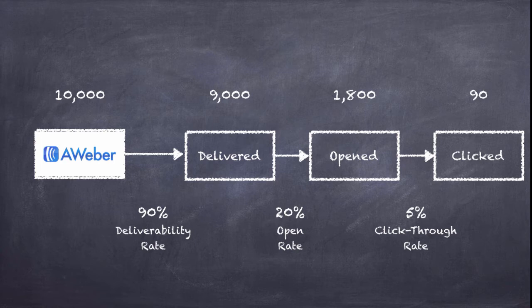Out of 9,000 who received the email, only 1,800 opened it. Now from those 1,800, let's say you get a 5% click-through rate — which is actually quite good. That means only 90 people out of the original 10,000 end up on the website you're trying to promote, whether it's your own product or an affiliate product. So if from those 90 people you make one or two sales, that's good — but expecting thousands of sales from 10,000 subscribers is unrealistic given all these stages.